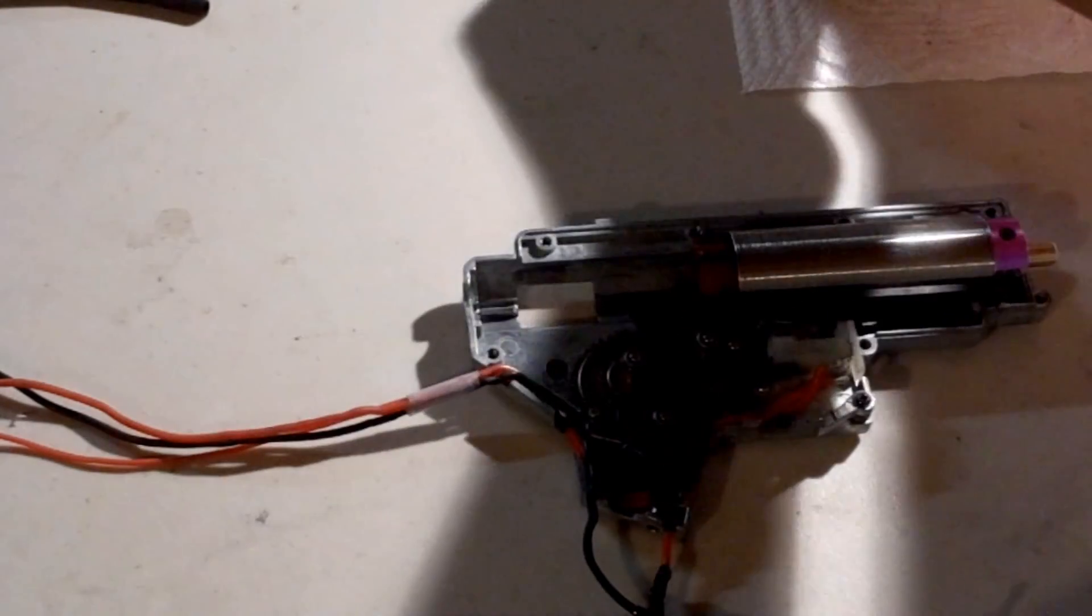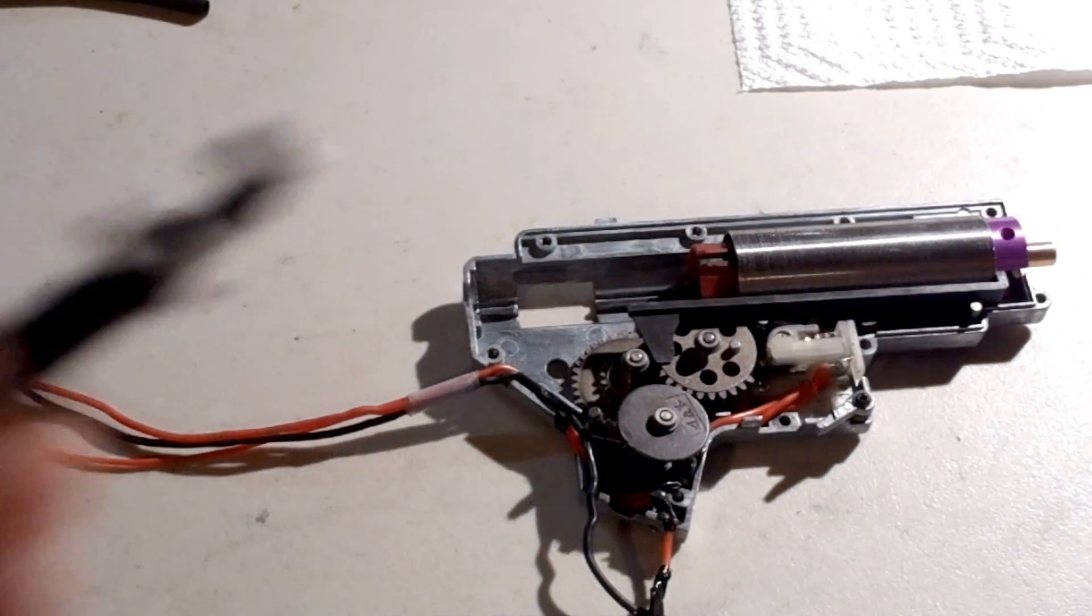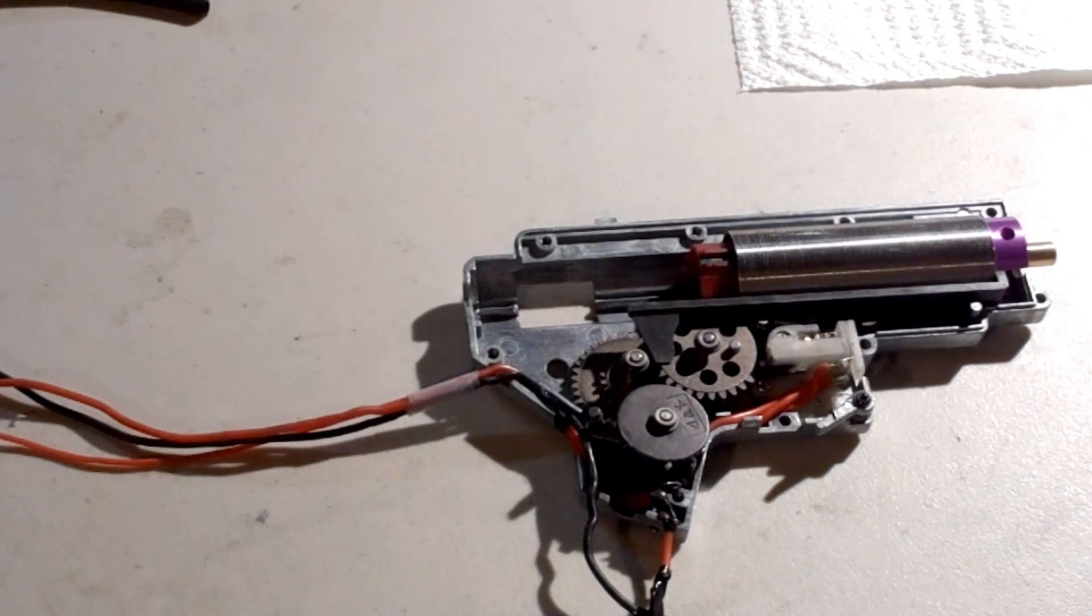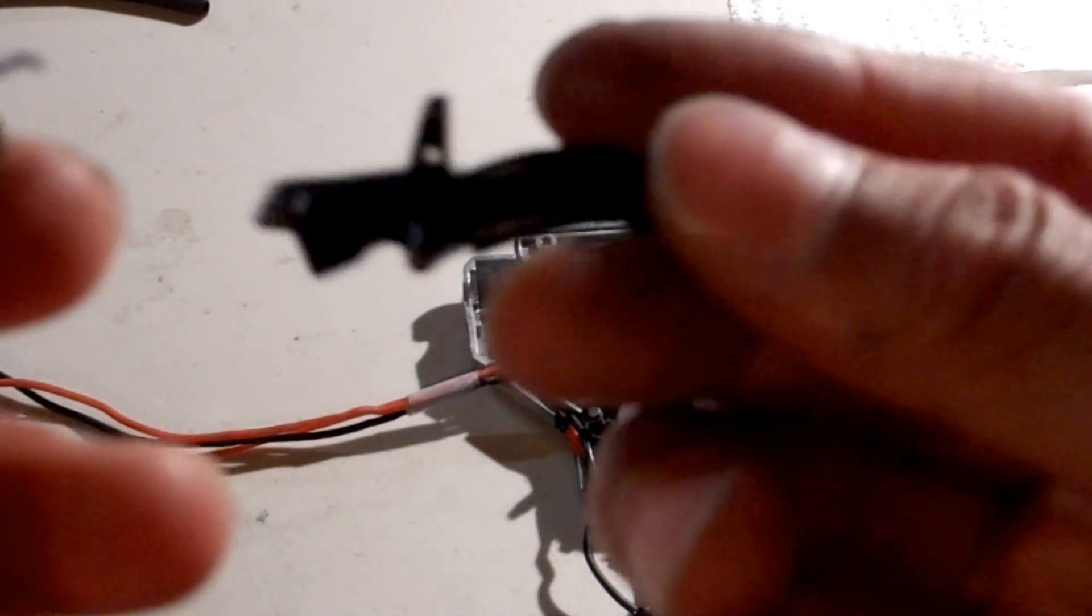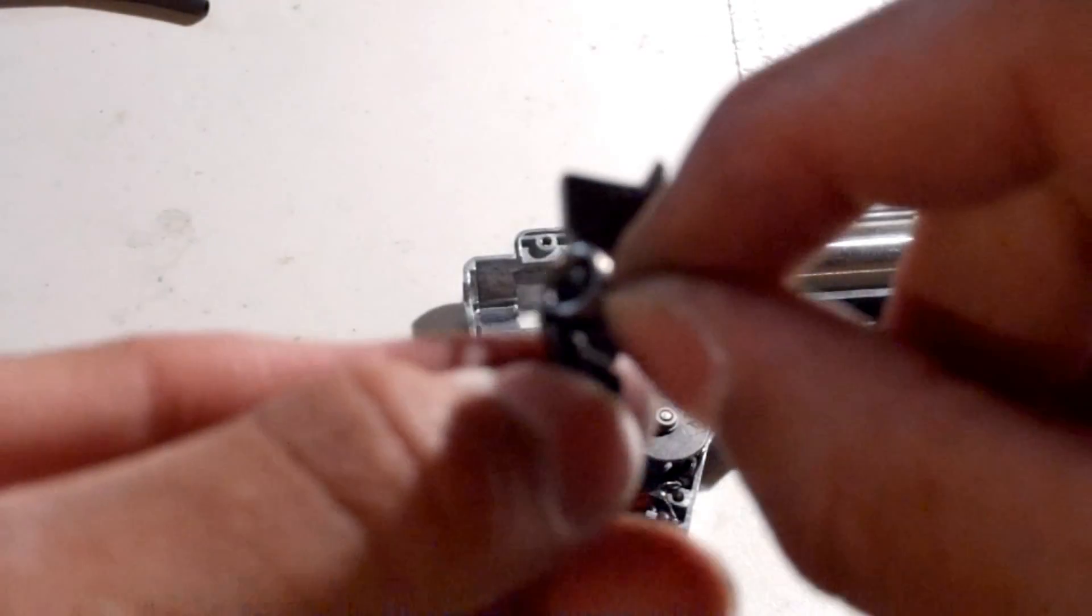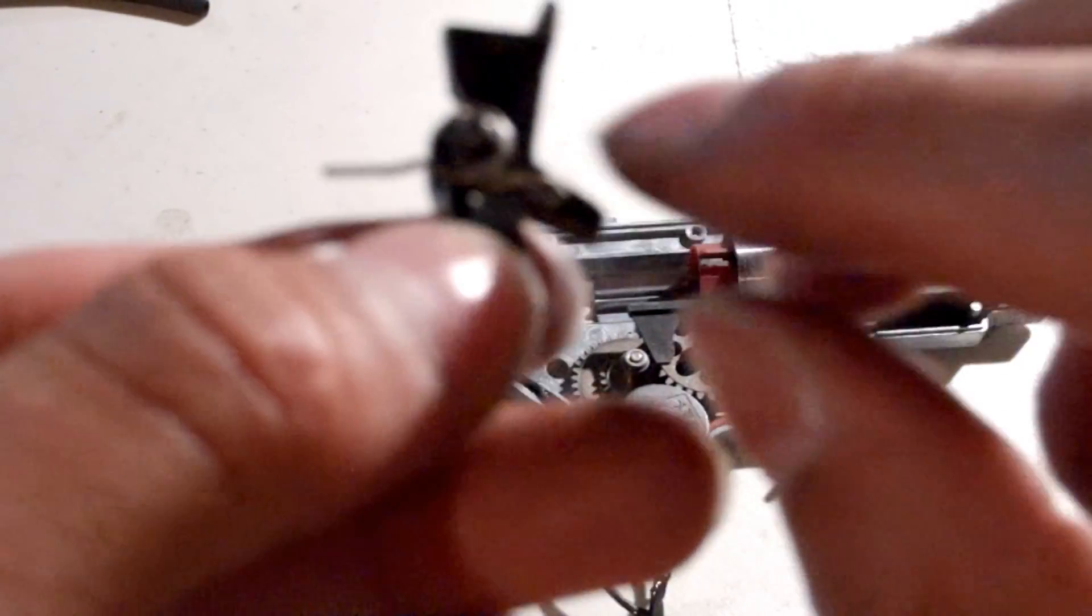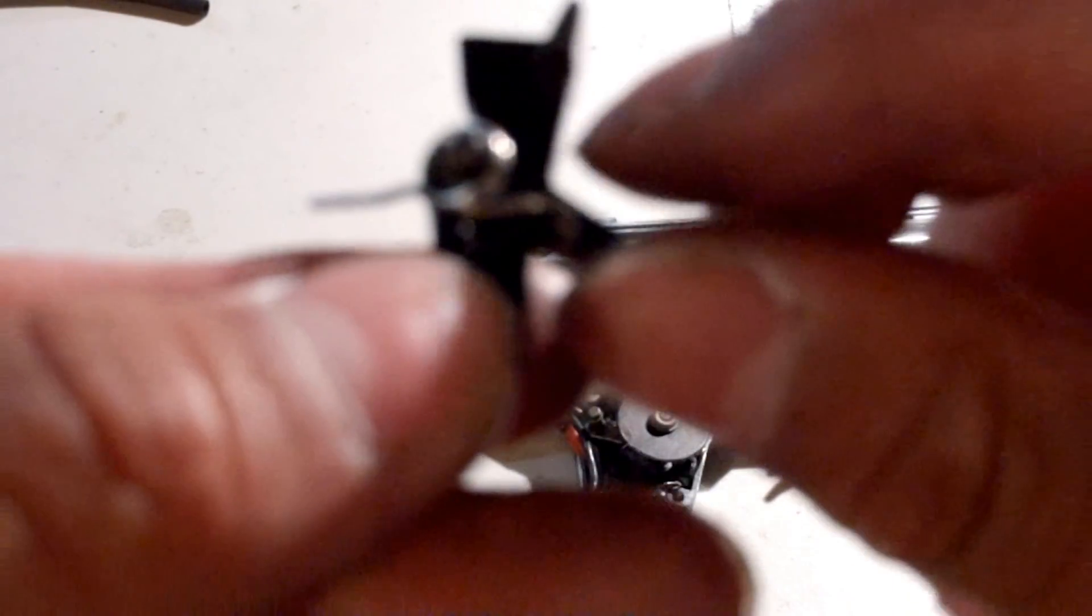Next, you want to put in your trigger and trigger spring. This is the trigger spring and this is the trigger. Take the trigger, take the spring, put the spring inside this, and put the arm of the spring into a little hole on the side here.